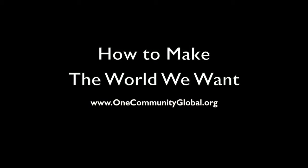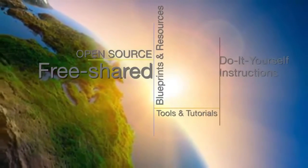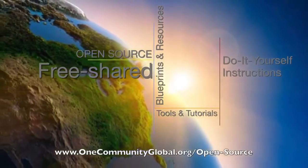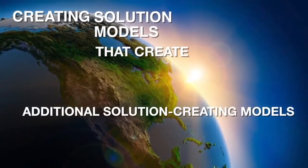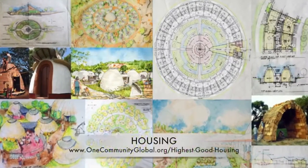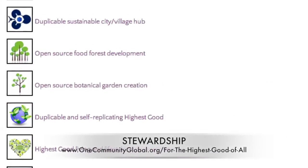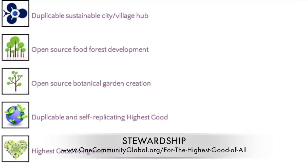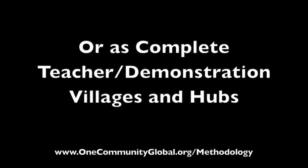How to make the world we want — One Community weekly progress update number 167. One Community is a 501c3 non-profit organization creating open source and free shared blueprints, resources, tools, tutorials, and do-it-yourself instructions for highest good living — creating solution models that create additional solution-creating models in the service of all life on this planet. This includes highest good approaches to food, energy, housing, education, for-profit and non-profit business creation, society, and true earth stewardship, implementable as individual components or as complete teacher demonstration villages and hubs.